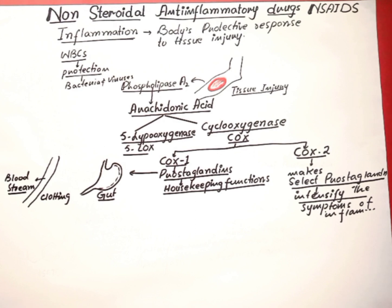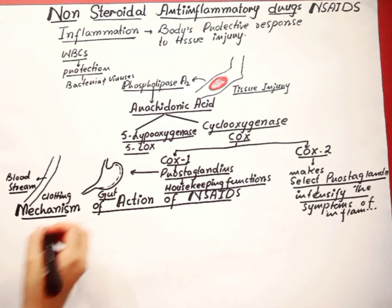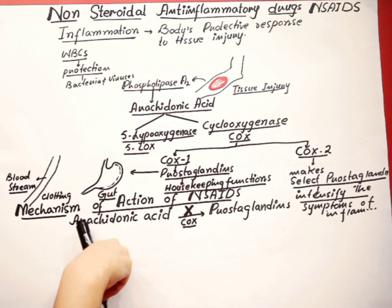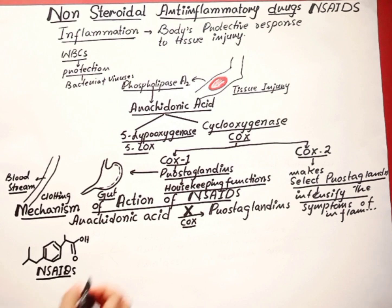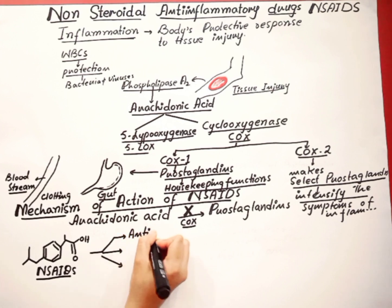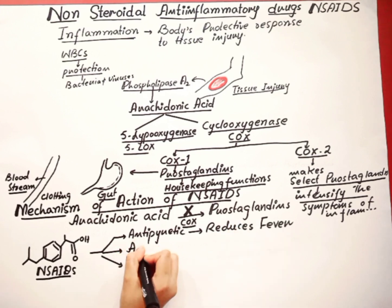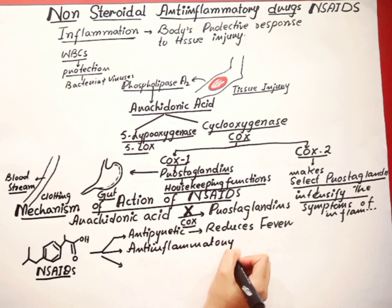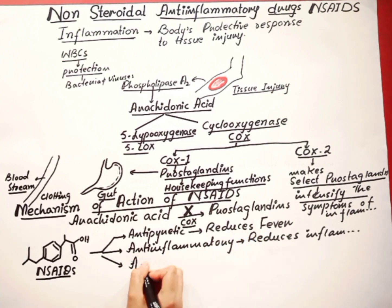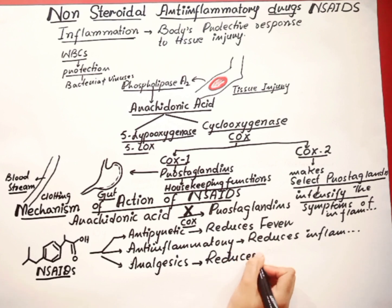Let's discuss the mechanism of NSAIDs. These NSAIDs inhibit the production of the COX enzymes — the cyclooxygenase enzyme. When they inhibit the COX enzyme, there will be no conversion of arachidonic acid into prostaglandin. All 8 types of non-steroidal drugs perform 3 major functions: they are antipyretic, meaning they reduce fever; they are anti-inflammatory, meaning they reduce inflammation; and they are analgesics, meaning they reduce pain.